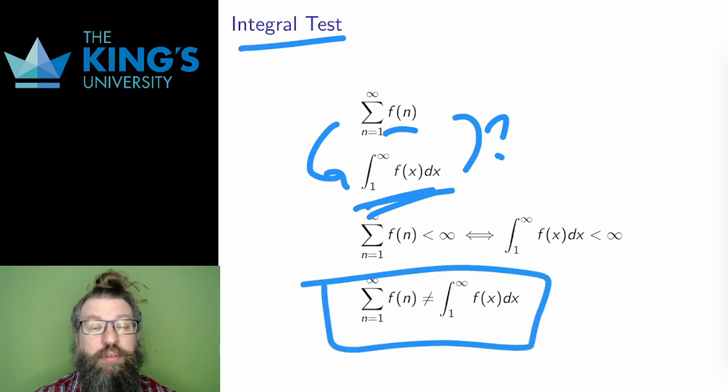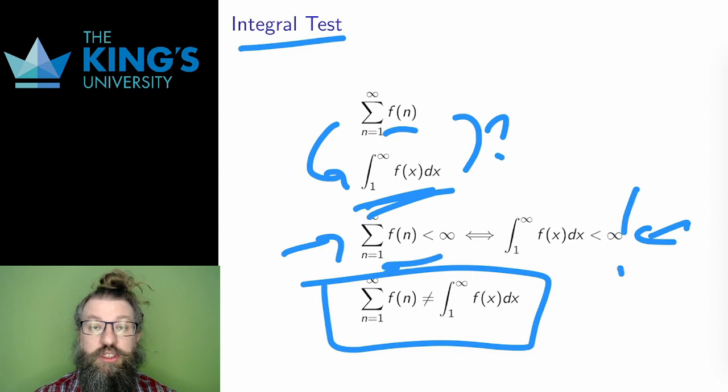But what is instead true is they have the same convergence behavior. If the improper integral converges, then so does the sum and vice versa. This means that the integral, while it cannot be used to calculate the value of the sum, can be used to check the convergence of the sum. If the integral converges, the sum converges.